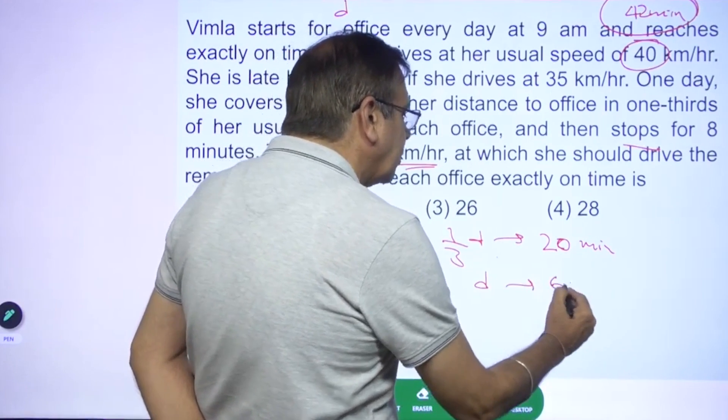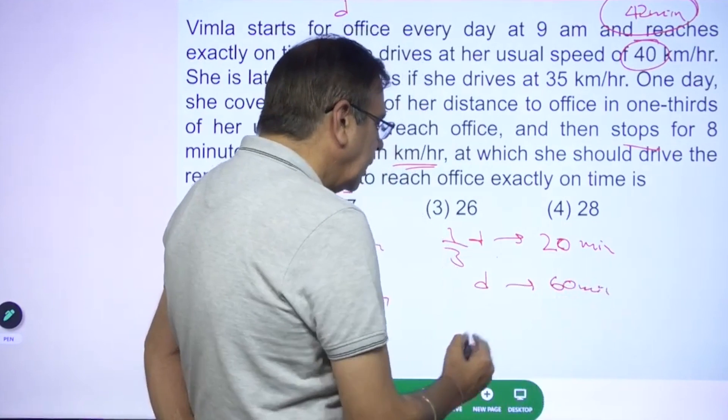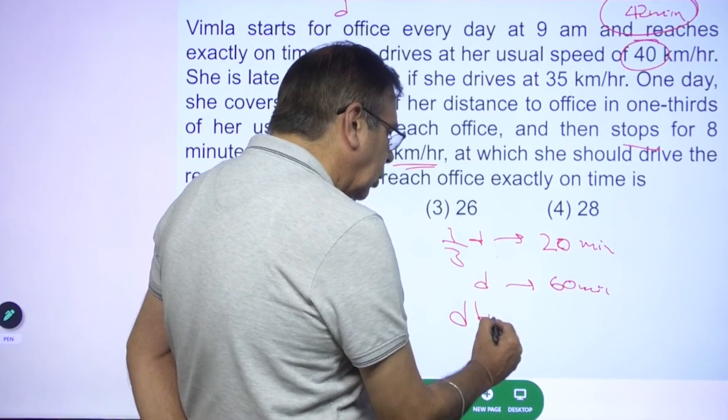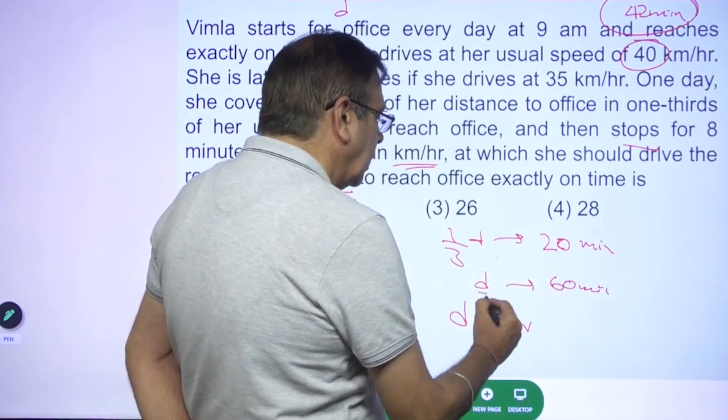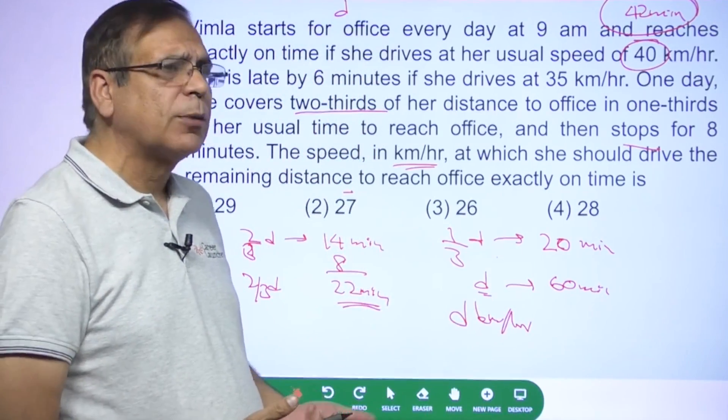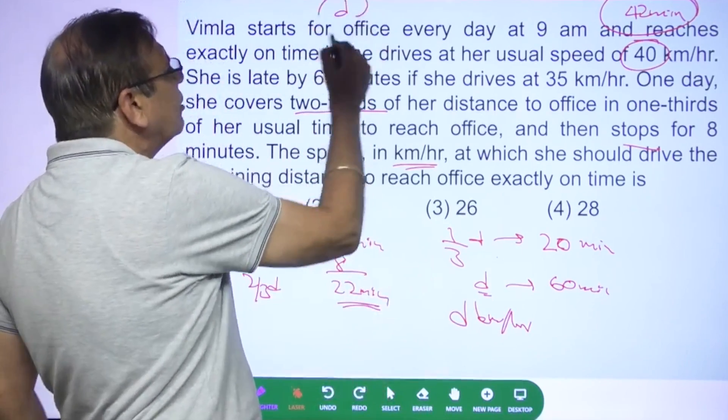So D, one third of D she'll do in 20 minutes. So D she will do in 60 minutes. What does that mean? The speed has to be D kilometers per hour. D kilometers in 60 minutes, the speed has to be D kilometers per hour. So what do we need to find? The distance.